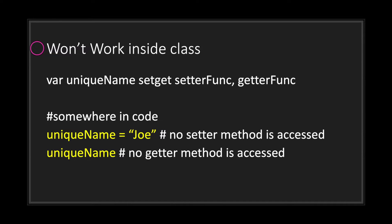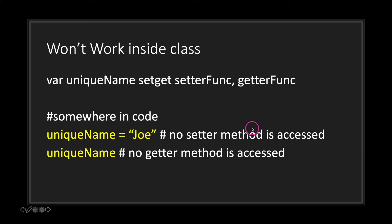Now let's look at an example that will not work inside your class. We've declared our variable unique_name and given it a setter and getter function using the setget keyword. If we call the class member just by its name without the self keyword, we will change its value but we will not go through the setter method. Similarly, if we just reference the class member name without the self keyword and without the assignment operator, we will not go through the getter method.